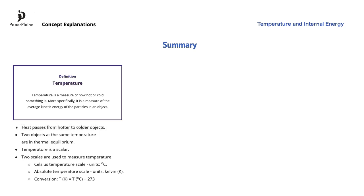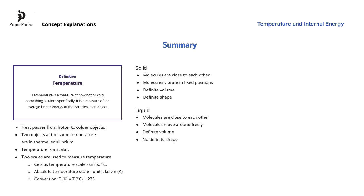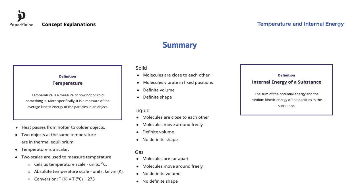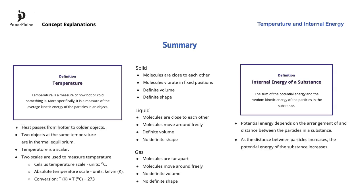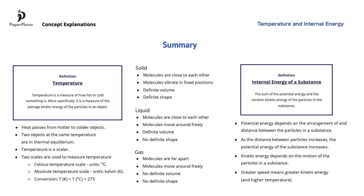After wrapping up temperature, we moved on to the molecular structure of matter, discussing solids, liquids, and gases. We then defined internal energy of a substance as the sum of the potential energy and the random kinetic energy of the particles in the substance. Potential energy depends on the arrangement of and distance between the particles, and as distance increases, potential energy also increases. Kinetic energy depends on the motion of the particles, and if particles have a greater speed, they will also have a greater kinetic energy and a higher temperature.